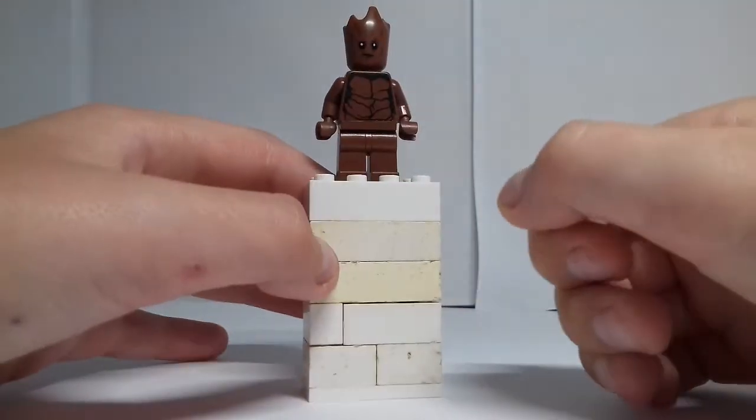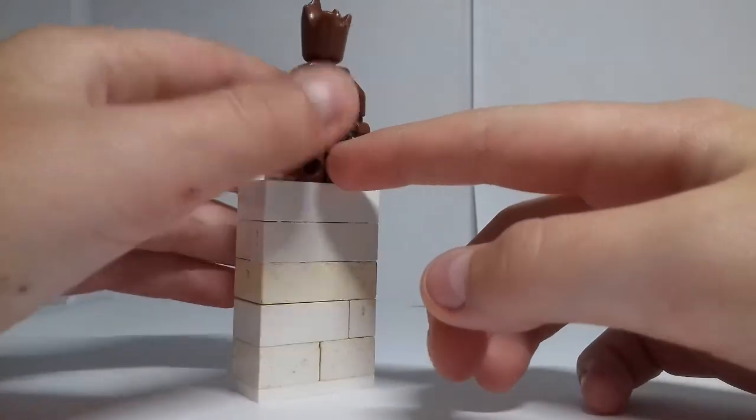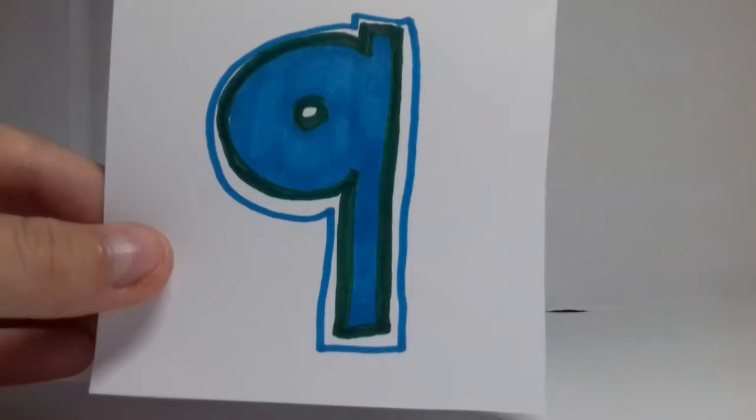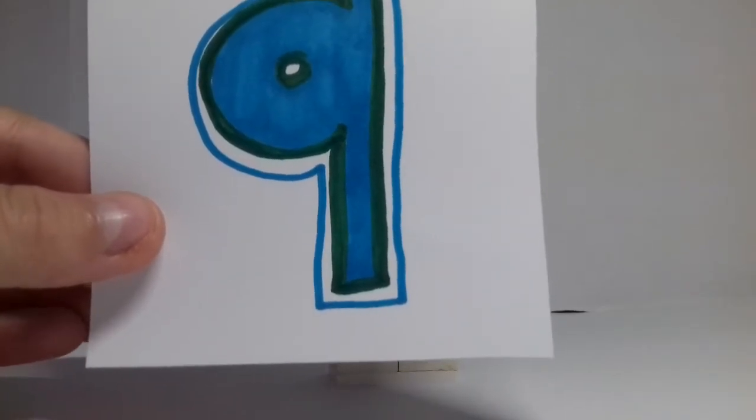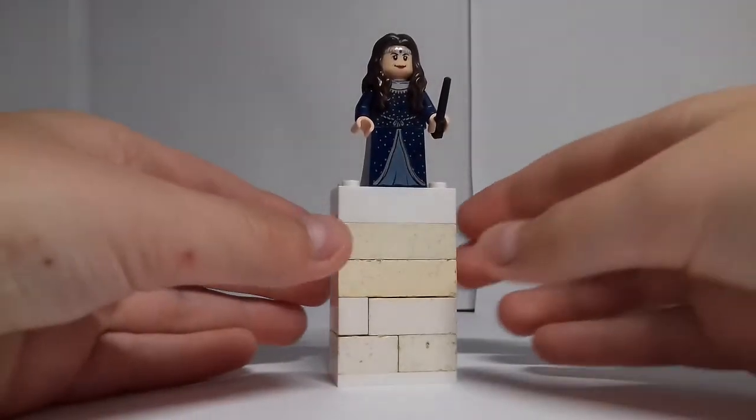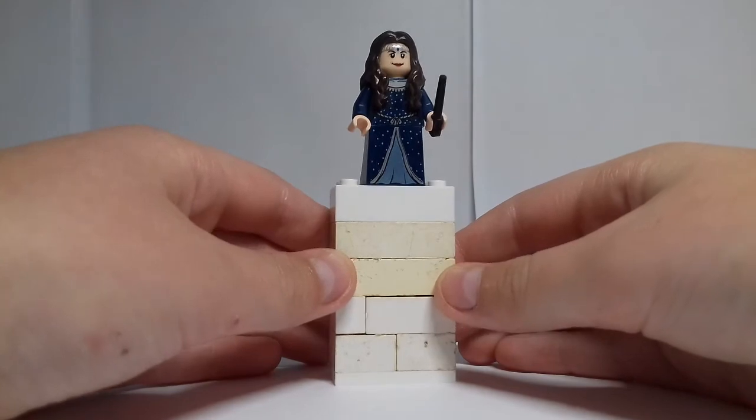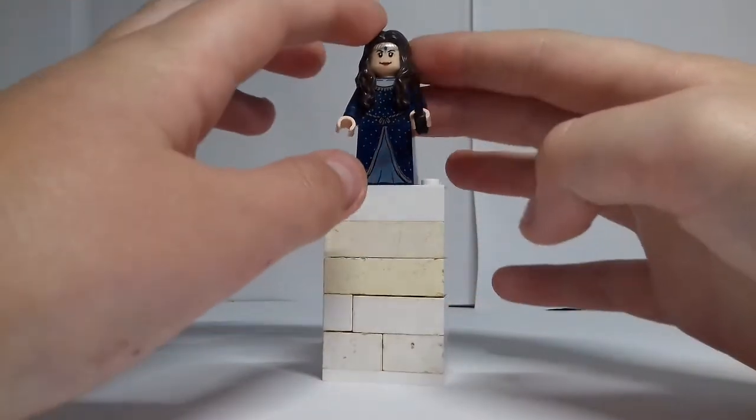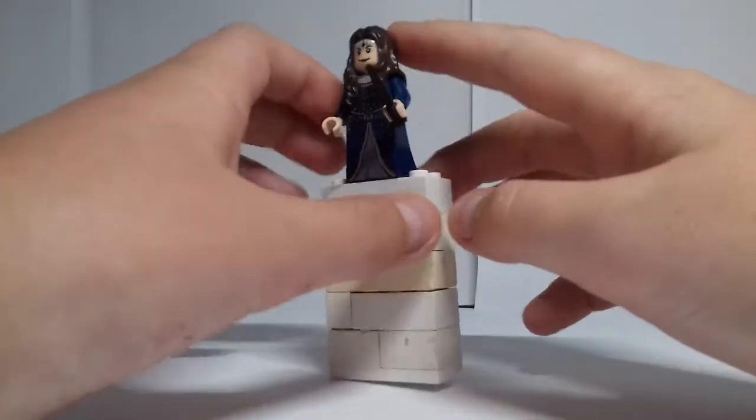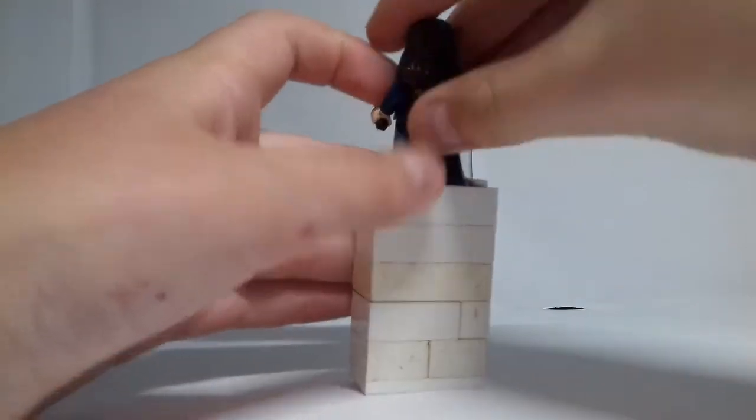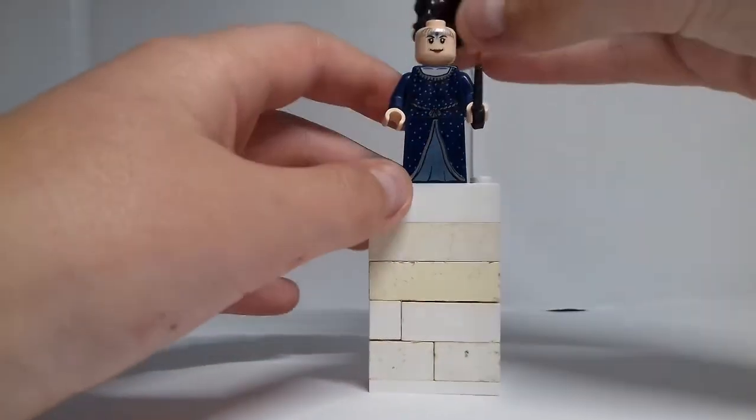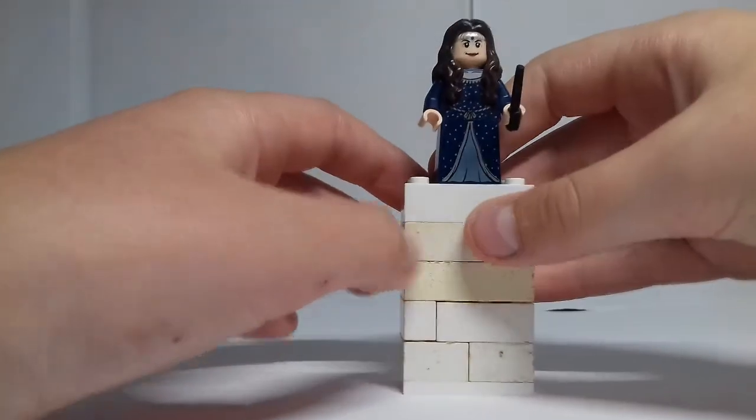And my ninth favorite Lego minifigure is Rowena Ravenclaw from the Harry Potter miniature Hogwarts set. I like her because she's got an exclusive hairpiece in brown. She's got lots of printing on the dress and face and I was just really happy to see all of the printing on her.